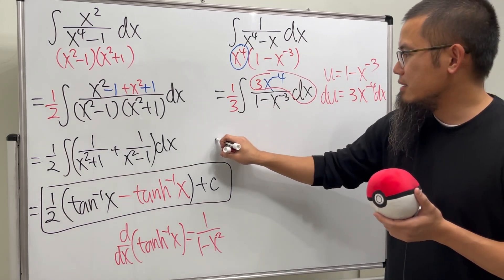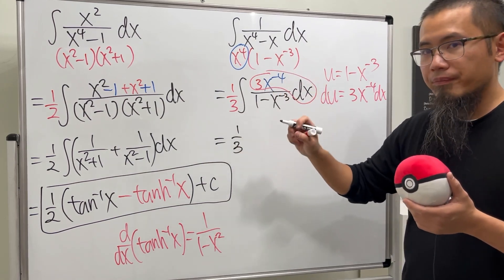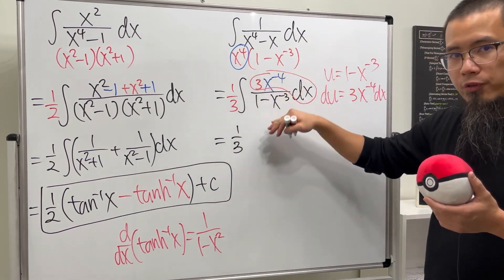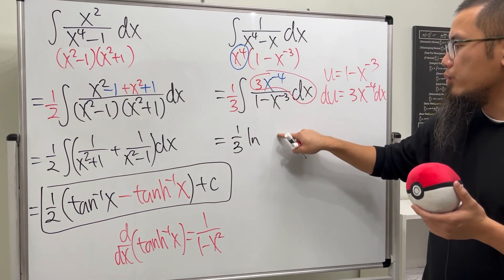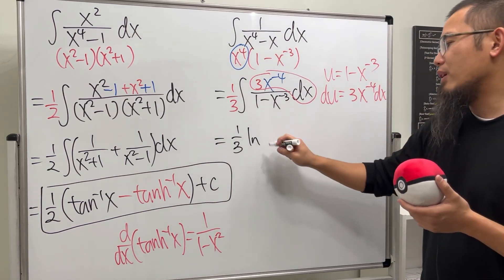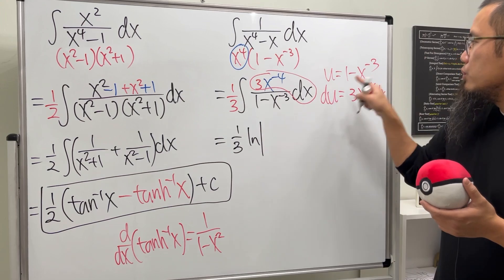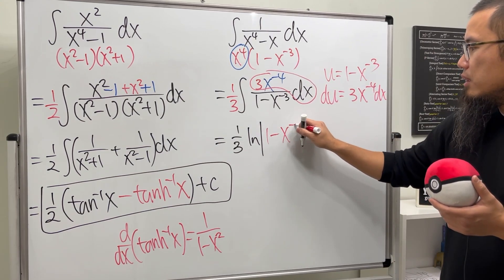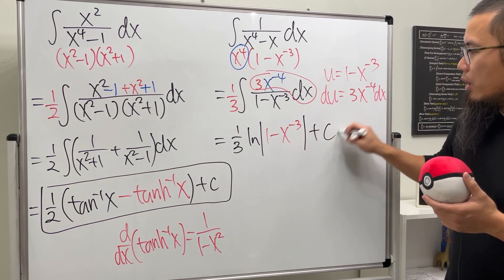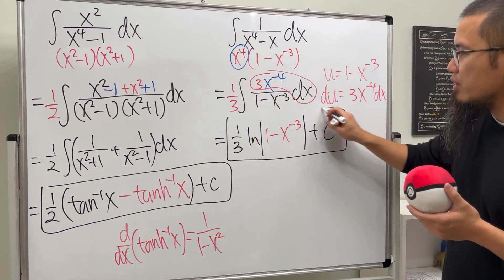So, in fact, this is going to be 1/3, and we integrate 1 over u in the u world, so we just get natural log of u, and u can be negative, so we will have to put absolute value of u, which is that 1 - x⁻³. And guess what? We are done. We can just put down the plus c right here as well.